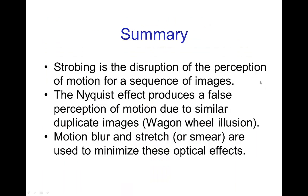In summary: strobing is the disruption of the perception of motion for a sequence of images. The Nyquist effect produces a false perception of motion due to similar duplicate images — that was the wagon wheel illusion. To minimize the effects of strobing, we have motion blur and stretch, which can even be extended to create interesting stylistic effects in animation. Stretch is something we'll see again when we talk about squash and stretch with forces in future tutorials.